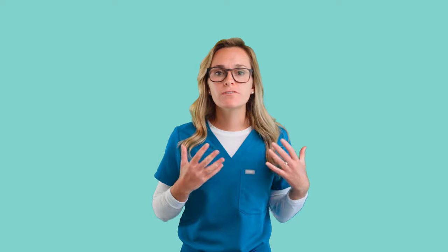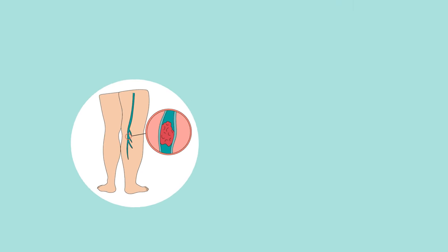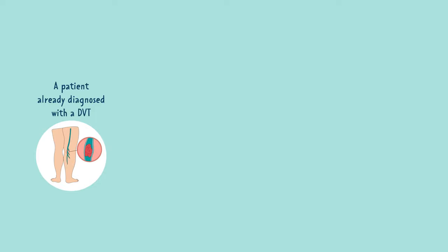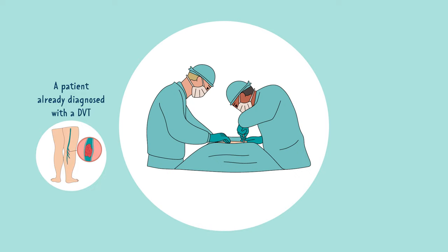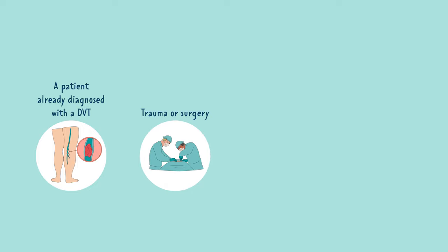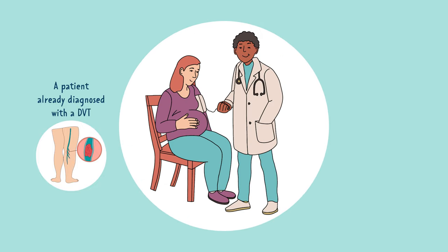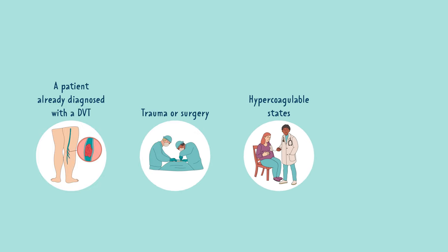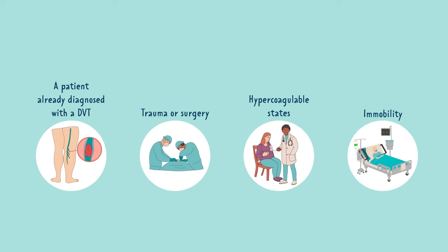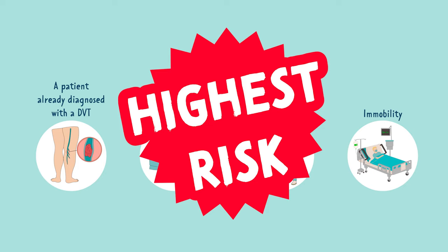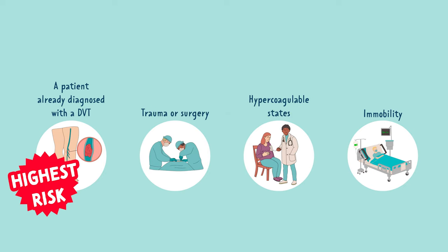So who is at risk for developing a pulmonary embolism? A patient already diagnosed with a DVT is at huge risk — if that clot breaks off and travels upward, it can cause a PE. Other risk factors include trauma or surgery, any disruption of blood flow, a hypercoagulable state such as pregnancy or oral contraceptive use, and immobility like bed rest. The most common cause, however, remains blood clots or a dislodged DVT.